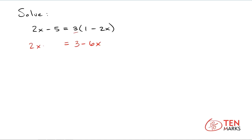And the left side stays the same. Now further simplify by adding 6x to both sides to bring the x variables to the left side of the equation. When you add 6x to both sides you get 8x on the left minus 5 equals 3 on the right. Now bring the constant terms to one side of the equation by adding 5 to both sides, so when you add 5 to both sides you get 8x equals 8.